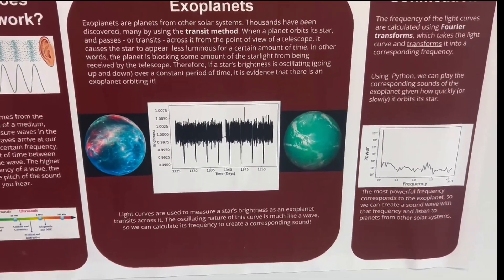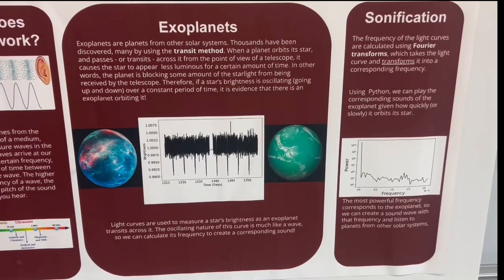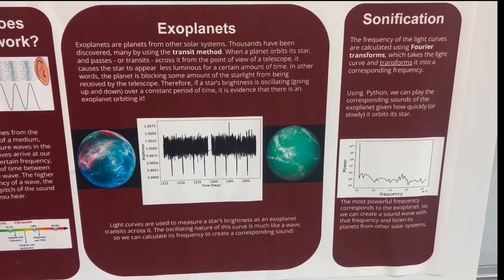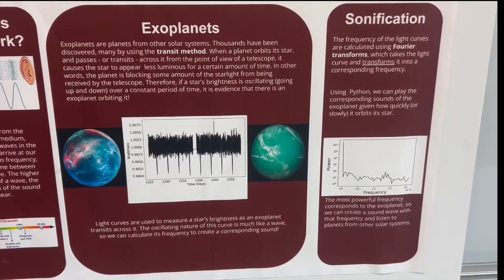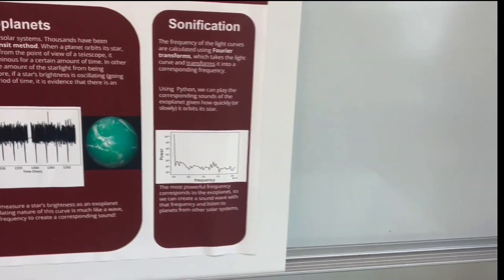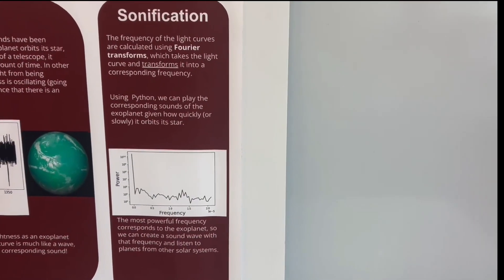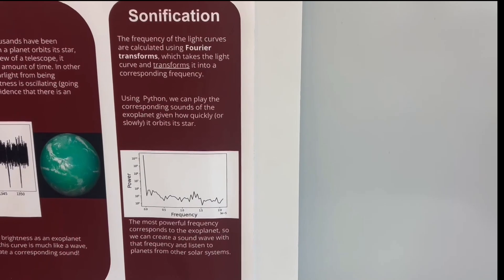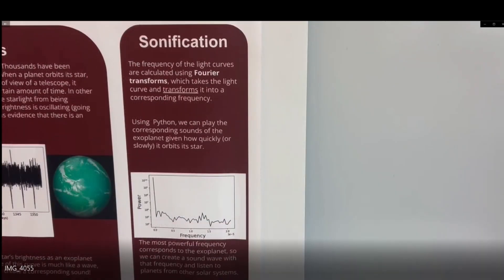Measuring the amount of time that it takes for a dip to occur again gives us the period for each exoplanet to revolve around its star. We can take this period and perform a Fourier transform to convert this into a frequency. Because the periods of the exoplanets are so large, the frequency we get is too high for us to hear, so we scale these frequencies down so that they're in hearing range.